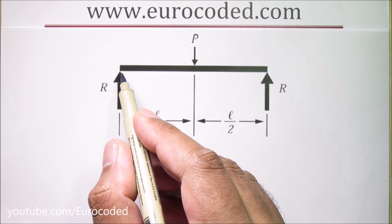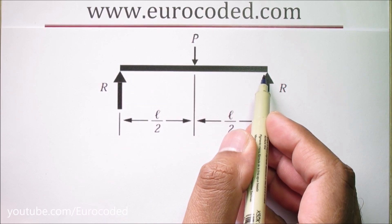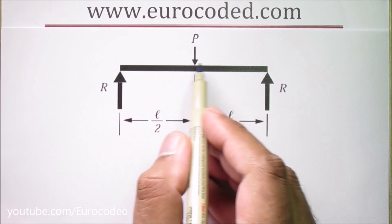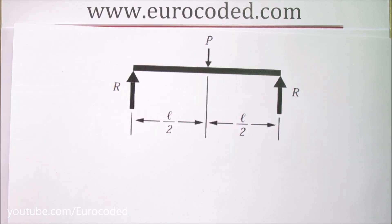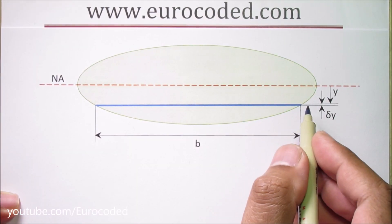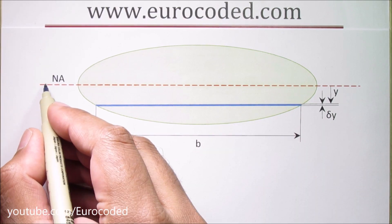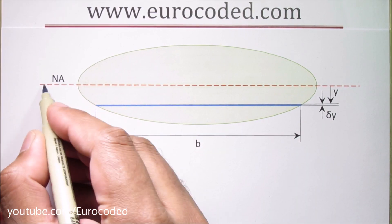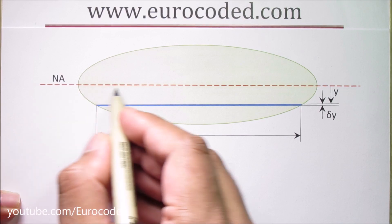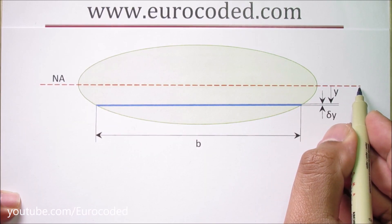In this case we will have tensile stresses at the bottom of the beam and compressive stresses at the top of the beam. Going back to this cross section of the oval shaped beam where we have noted the neutral axis with NA. This red dash line is the neutral axis.